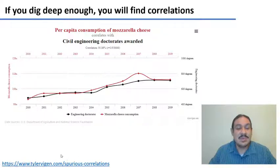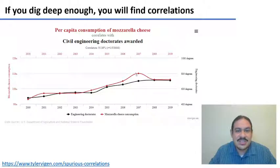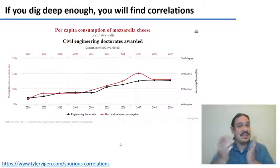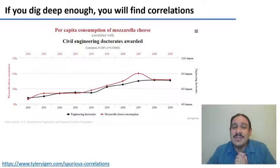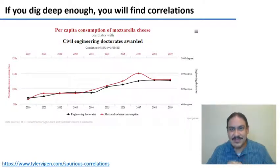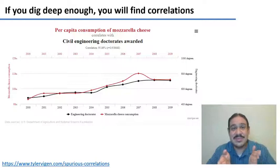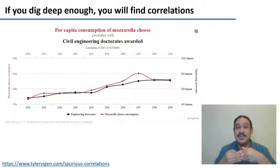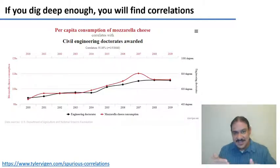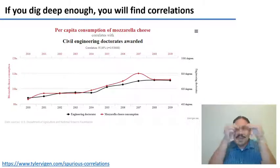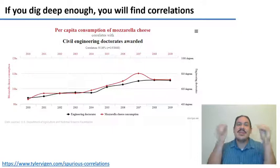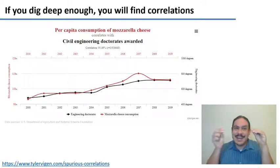If you dig deep enough into any dataset, you will find weird correlations influenced by a third factor. For example, from this website, you can see how clearly the more mozzarella cheese is consumed in a society, the more civil engineering doctorates you will have — ergo, if you want a doctorate, eat more cheese. The problem is that both of these things grow with population: more people means more mozzarella eaten and more people earning doctorates. There's a third factor influencing both. Mozzarella cheese is not related to getting a doctorate.